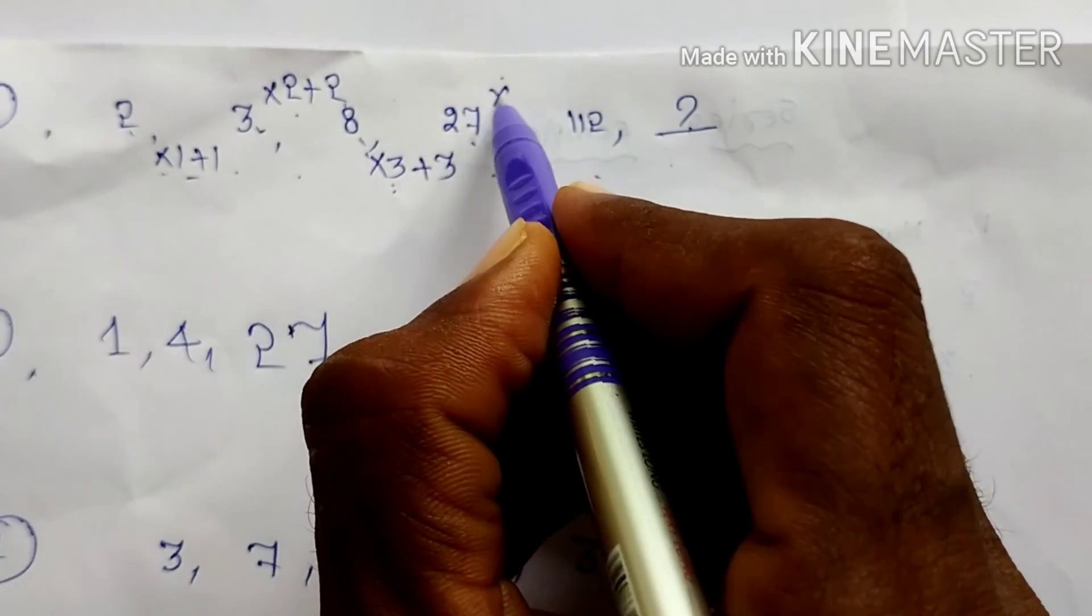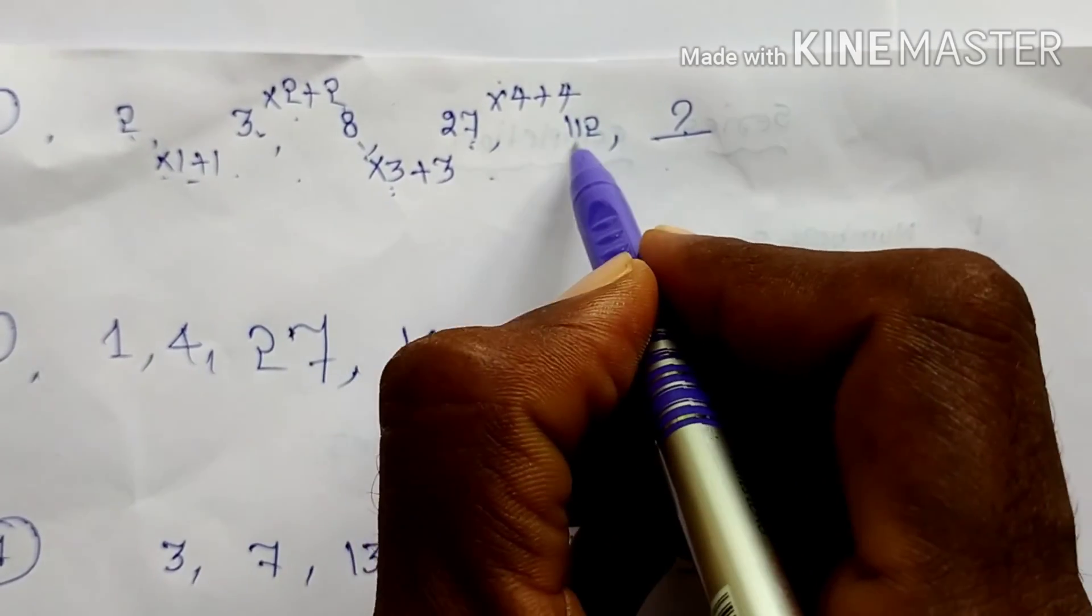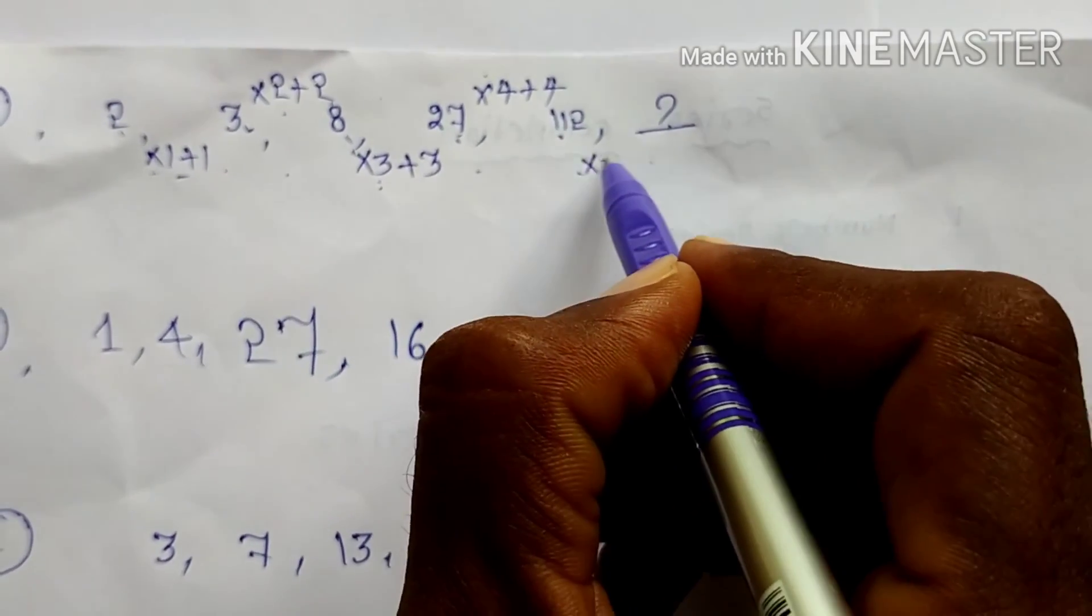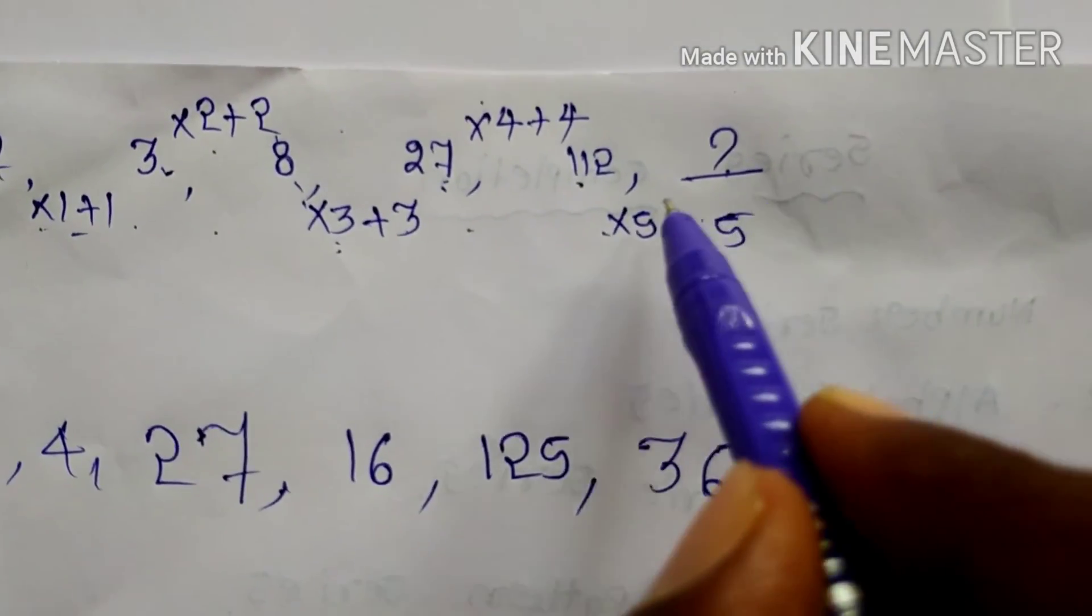Next here. 27 into 4, plus 4. You can see here. Next time you can see. 112 into 5, plus 5. That means 112 into 5.